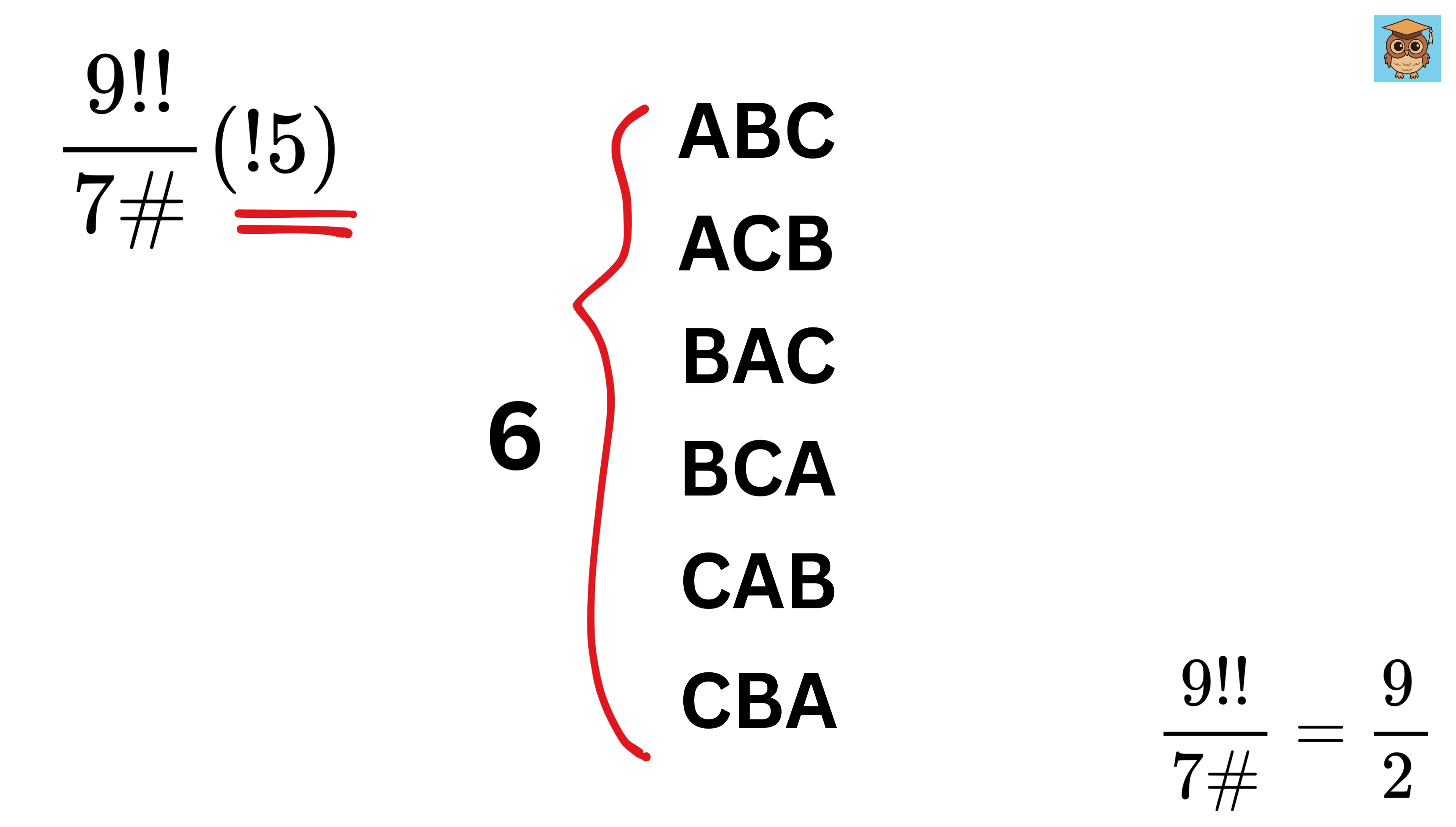So, in total, we have 6 different arrangements of these 3 letters. This is where factorial comes into the picture. Since we are arranging 3 different letters, we calculate the total number of arrangements using 3 factorial, which gives us 3 times 2 times 1, or 6. And that's exactly the number of different arrangements we got.